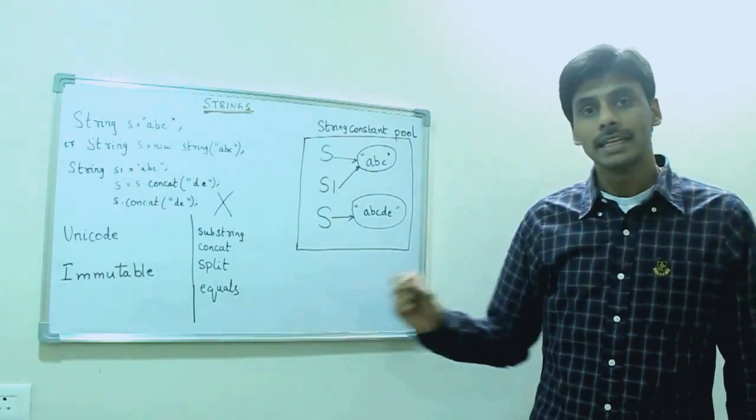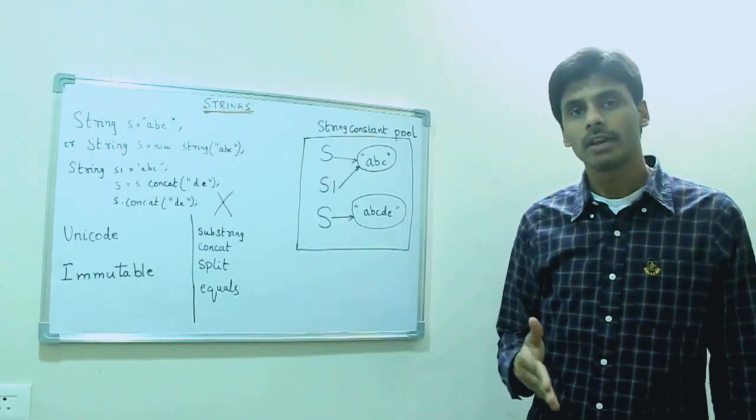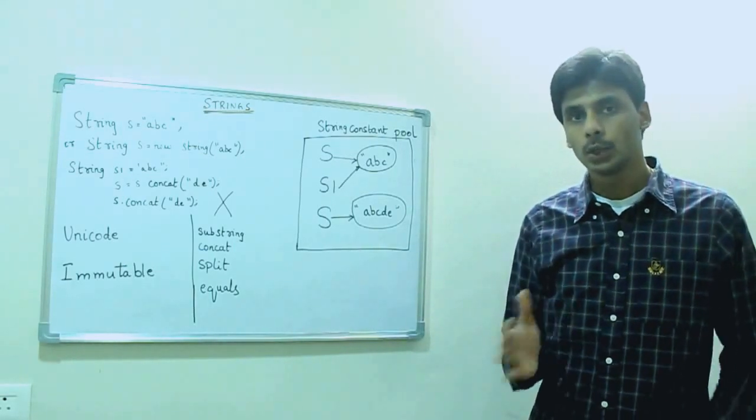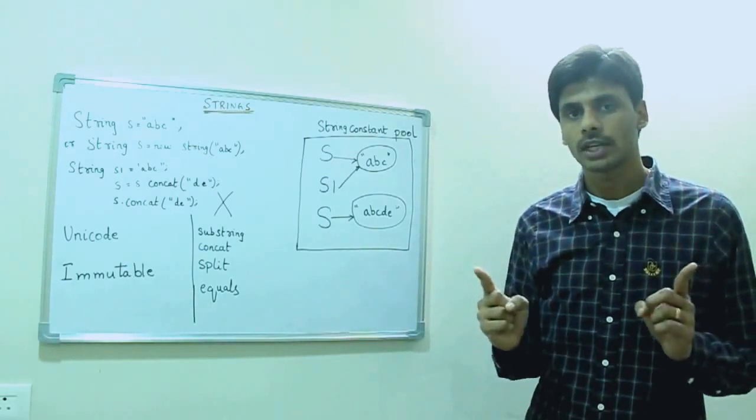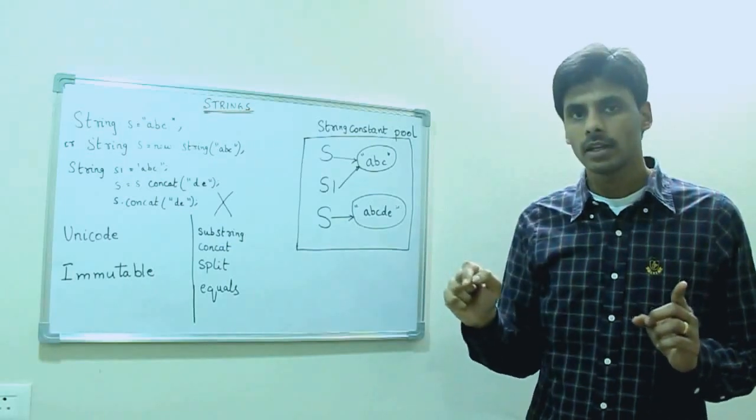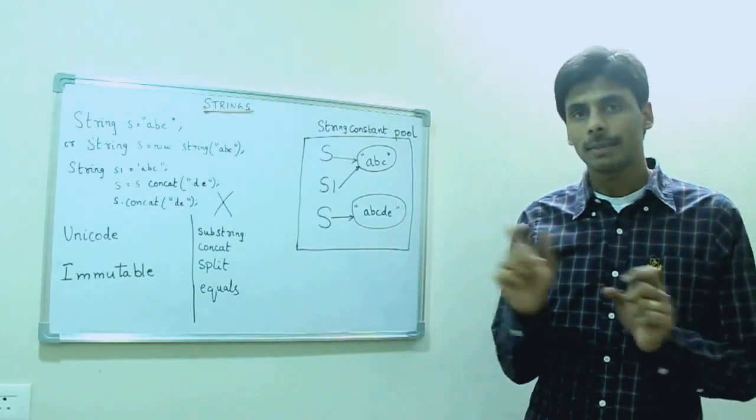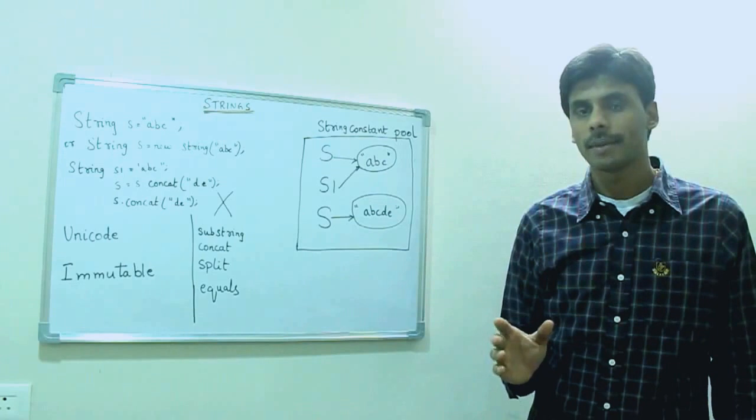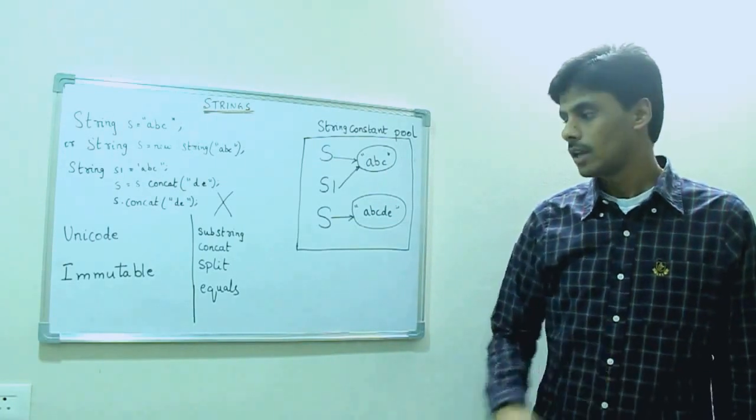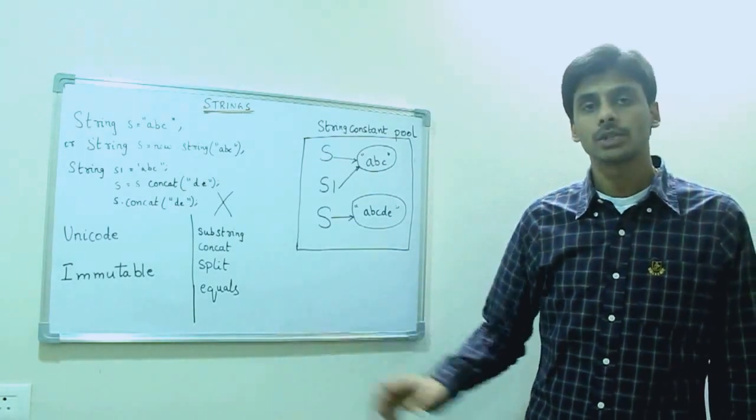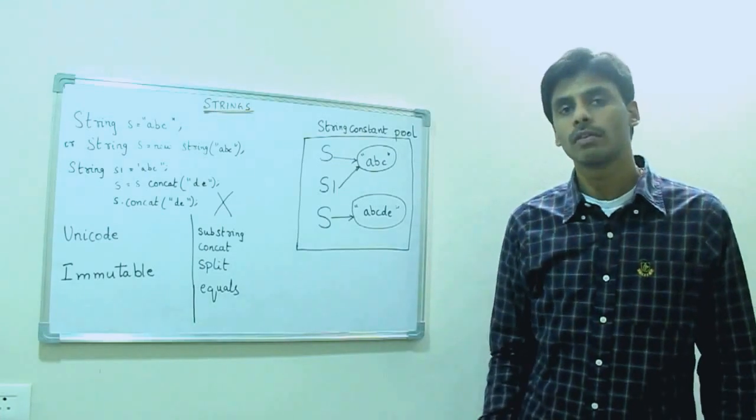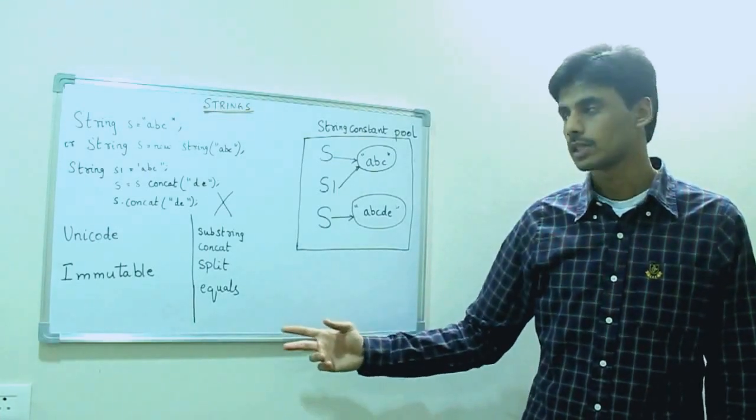The split method takes a delimiter and splits a given string into tokens. So if we have one long string which has commas in between, the split method will separate out these tokens into a string array. The equals method allows us to compare the values of two strings and it returns a boolean true or false.